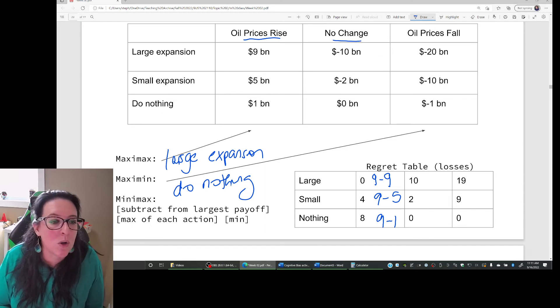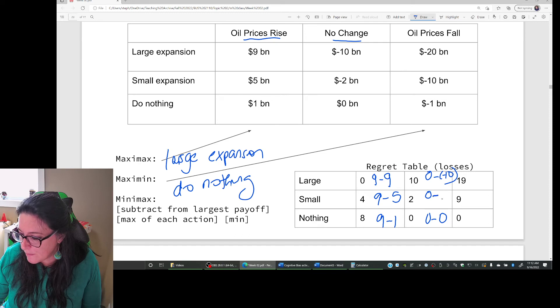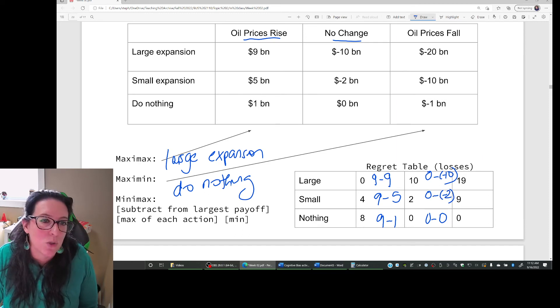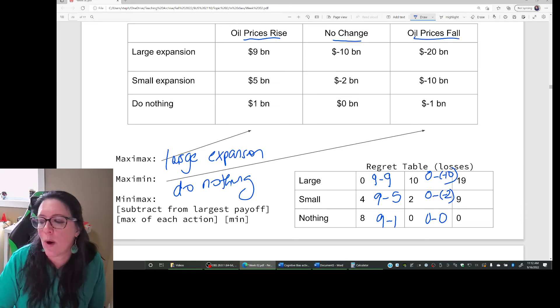All right, let's keep going. What if there is no change? If there is no change in prices, then the best outcome is the one that doesn't lose us money. So it would have been to do nothing. So if we did nothing, the best outcome was to do nothing, there is no regret. If though, the best outcome was to do nothing, and we did a large expansion, then zero minus a negative 10, the loss, the regret is 10 billion. If the best outcome was to do nothing, and instead we did a small expansion, then the regret is $2 billion that we have lost. So notice that these losses appear on the regret table as positive because by definition, the table shows loss.